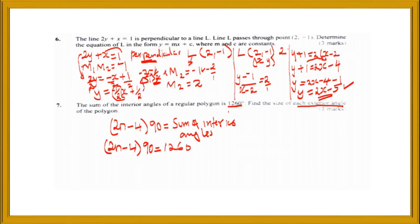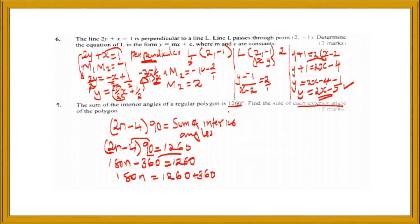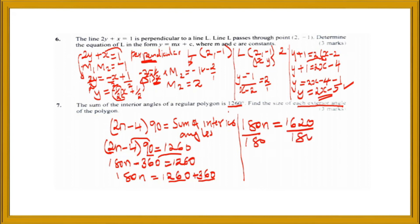Opening the bracket: 90 times 2n gives 180n, minus 90 times 4 gives 360, and this equals 1260. Collecting like terms: 180n equals 1260 plus 360, which gives 1620. Dividing both sides by 180, n equals 9. So the regular polygon has 9 sides.